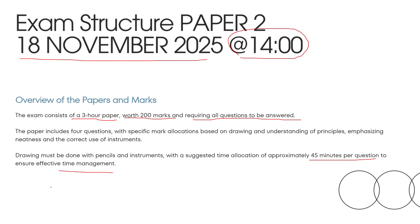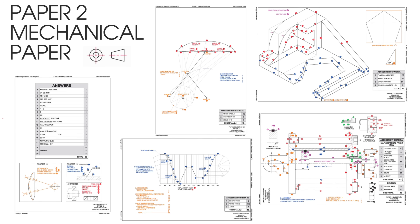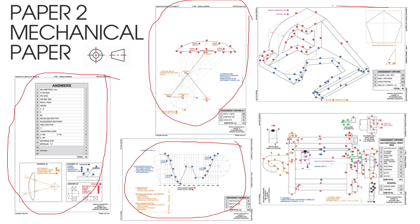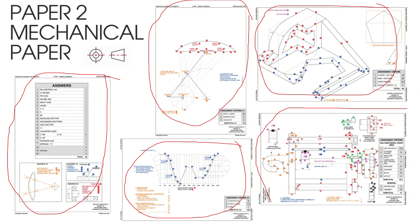This is not to say that you must spend exactly 45 minutes on question 1. Paper 2 is your mechanical paper, and things that you can expect include mechanical analytic, a mechanism, a cam, isometric drawing, and a mechanical assembly. Remember that paper 2 is in third angle projection.